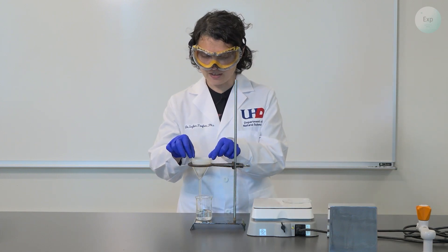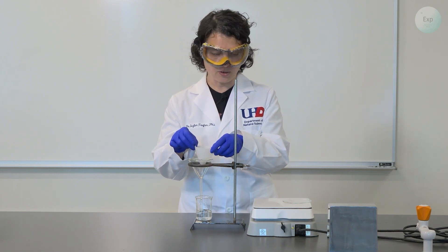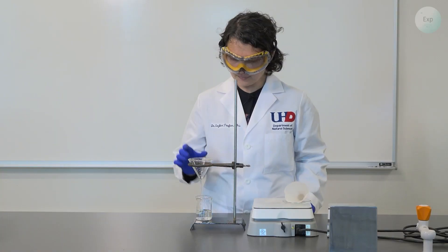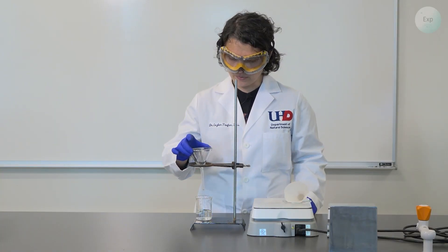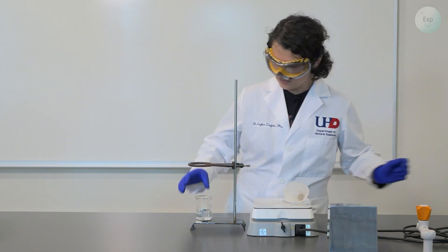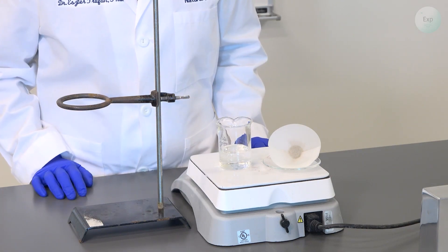So very gently, using your fingers, because this is just wet paper, you can extract it from the funnel and place it on the watch glass. Next, you can remove your funnel, set it aside, place it on the hot plate, and wait until all the water evaporates from it.